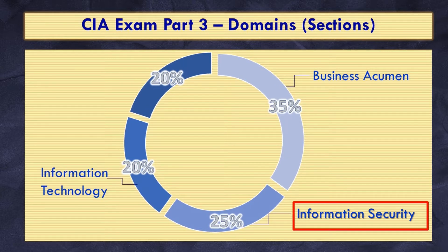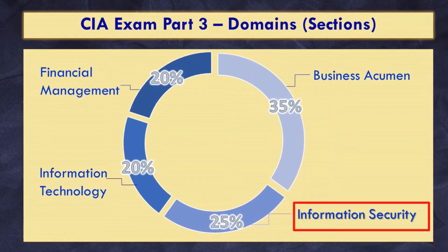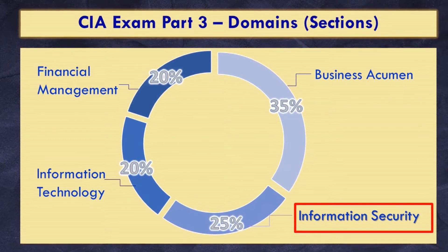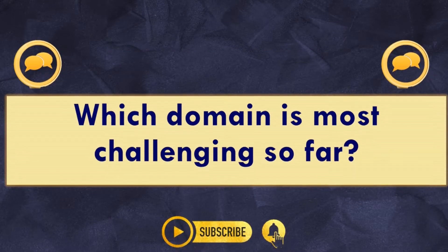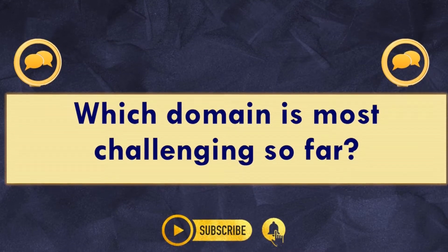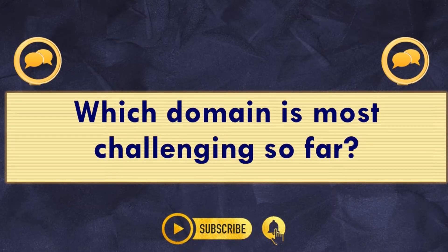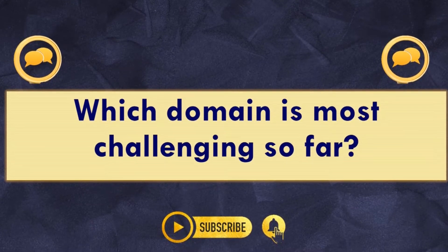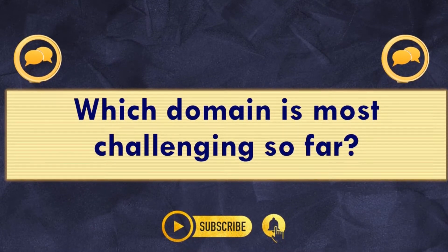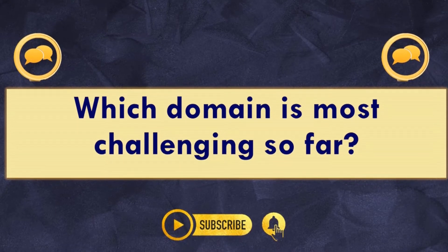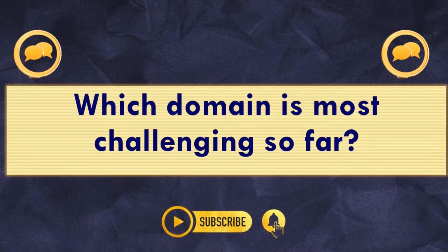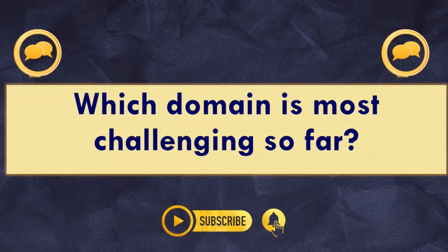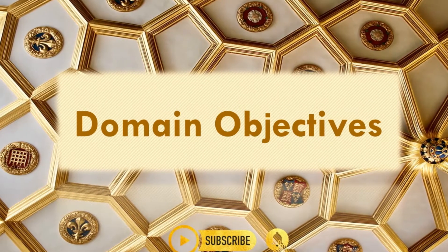Information technology consists of 20% of the exam and financial management also makes up 20% of the exam. So if you are studying for Part 3, comment below which domain has proven to be most challenging so far. For me, business acumen was the most relatable and familiar. I think the information technology section will be a great challenge for me personally. Let's get back to our information security objectives.